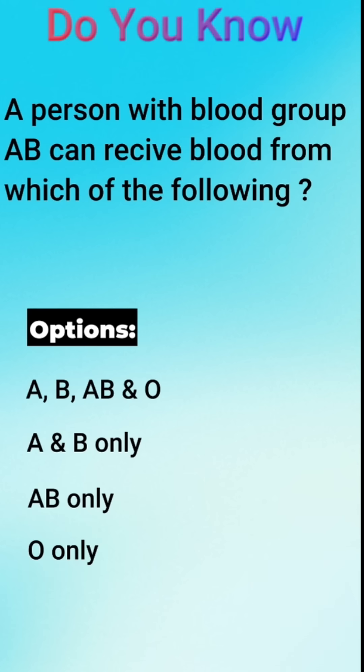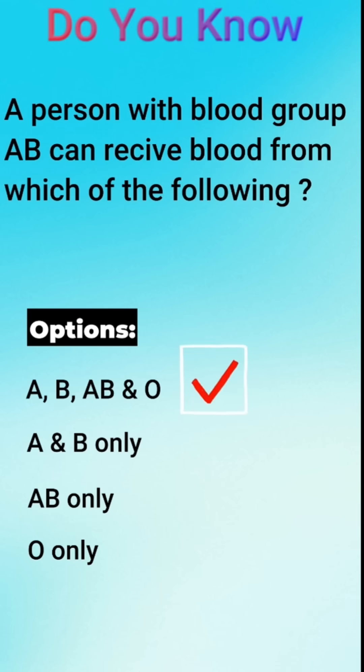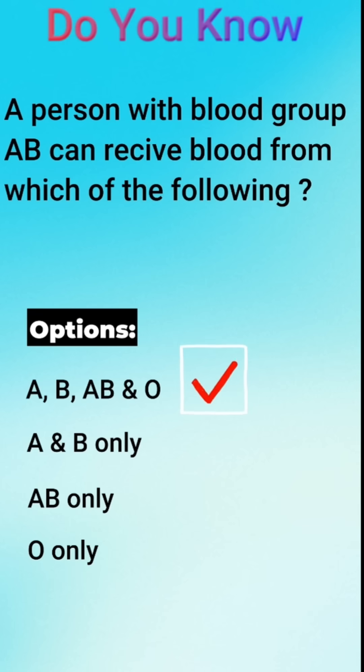The correct answer is A: A, B, AB, and O blood types. AB individuals are universal recipients because they do not have anti-A or anti-B antibodies, allowing them to accept blood from any group.